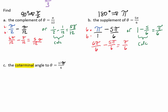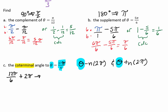Let's find the coterminal angle of theta equals 17 pi over 6. When we have degrees, we take our angle minus n times 360. Since 360 degrees equals 2 pi, we use theta minus n times 2 pi. For a positive coterminal angle, we take 17 pi over 6 plus 2 pi. Dropping the pi and computing 17 over 6 plus 2 gives us 29 over 6 — the pi comes back — so the positive coterminal angle is 29 pi over 6.